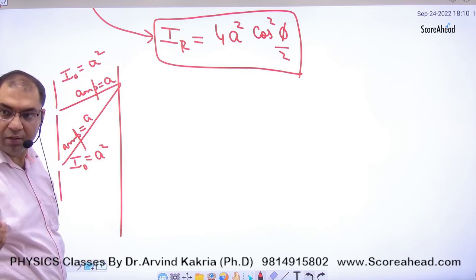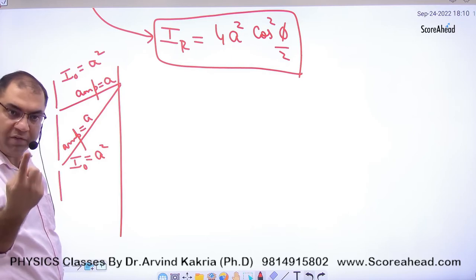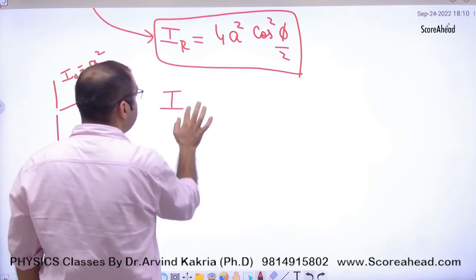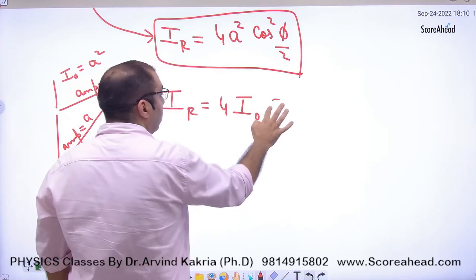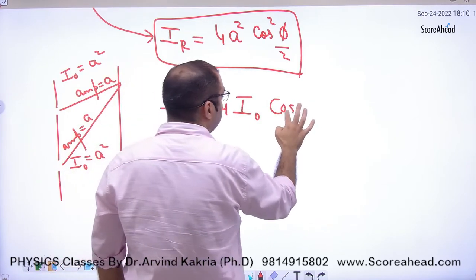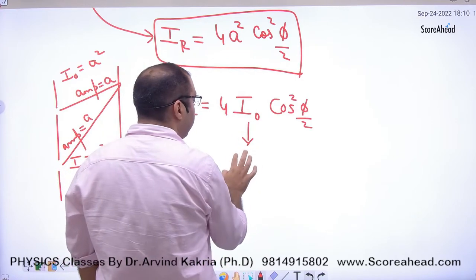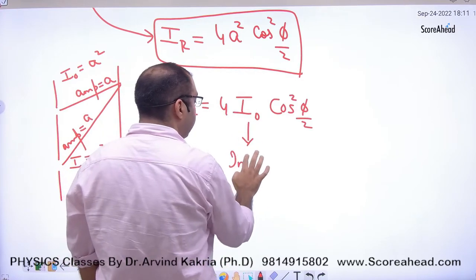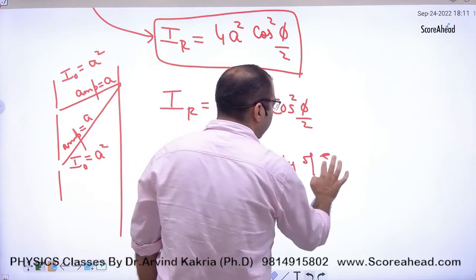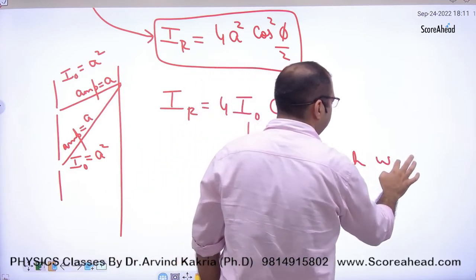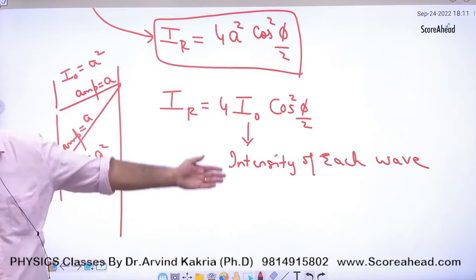a² is proportional to I₀, where I₀ is the intensity of each wave. तो books में यह formula भी लिखा होता है: resultant intensity = 4I₀·cos²(φ/2), where I₀ is the intensity of each wave.